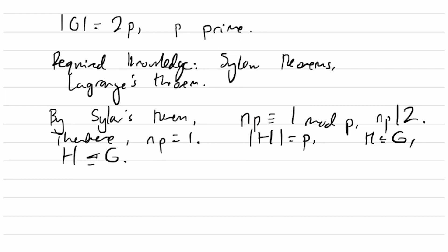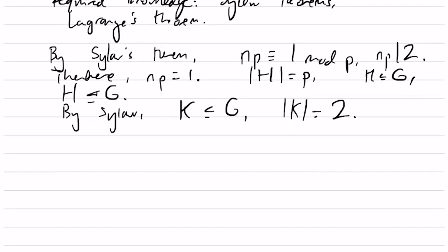Also, by Sylow's theorem, there is at least one subgroup K of G of order 2, which therefore must also be cyclic since 2 is prime.